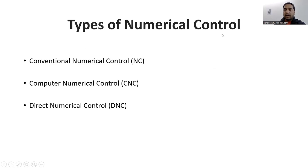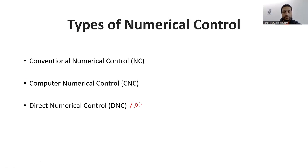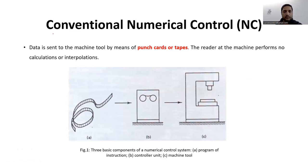There are three types of numerical control: first, conventional Numerical Control, simply called NC; second, Computer Numerical Control, called CNC; and third, Direct Numerical Control or Distributed Numerical Control, called DNC. In NC, data is sent to the machine tool by means of punch cards or tapes, and the reader at the machine tool performs no calculations or interpolations. A numerical control system has three basic components: the program of instructions, the controller unit, and the machine tool.